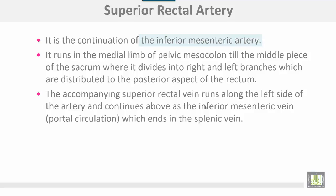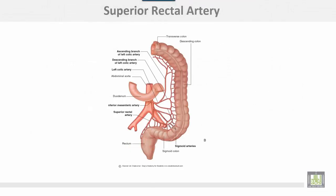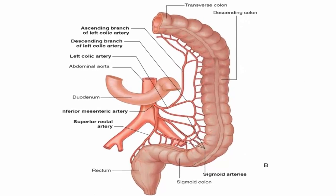The superior rectal artery is the continuation of the inferior mesenteric artery. It runs in the medial limb of the pelvic mesocolon until the middle of the sacrum, where it divides into right and left branches distributed to the posterior aspect of the rectum. The accompanying superior rectal vein runs along the left side of the artery and continues above as the inferior mesenteric vein, related to the portal circulation, which ends in the splenic vein. The inferior mesenteric artery arises from the front of the abdominal aorta as a single branch, then gives branches descending into the pelvis as the superior rectal artery.